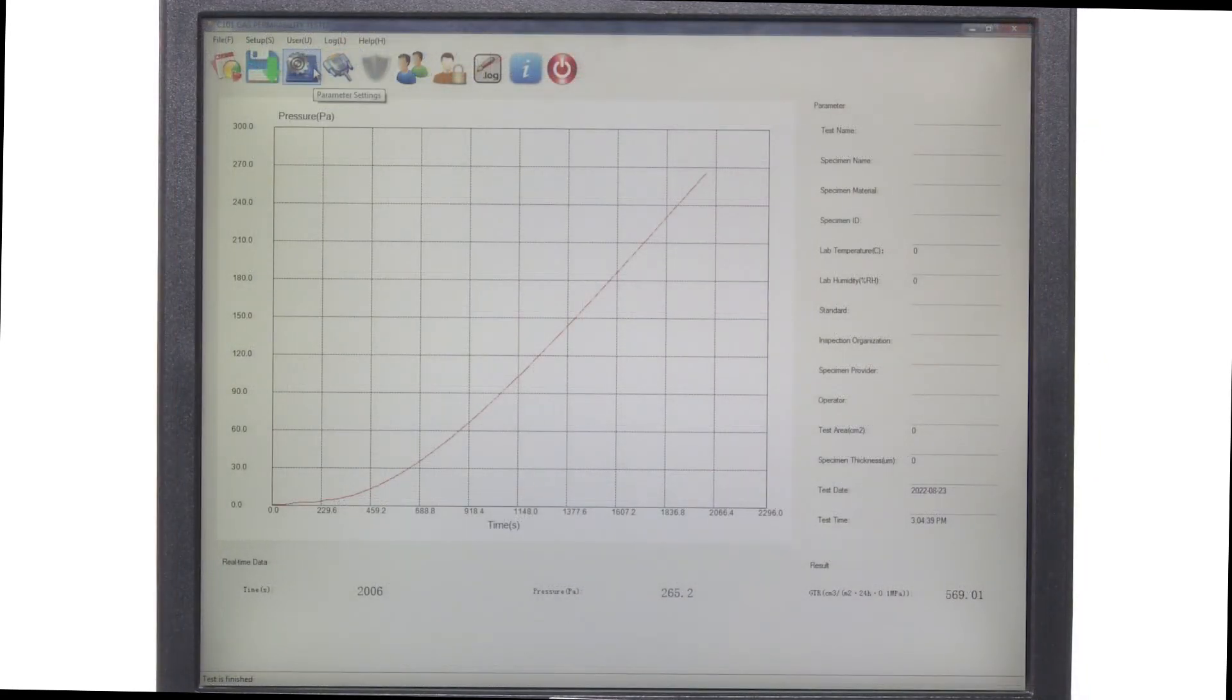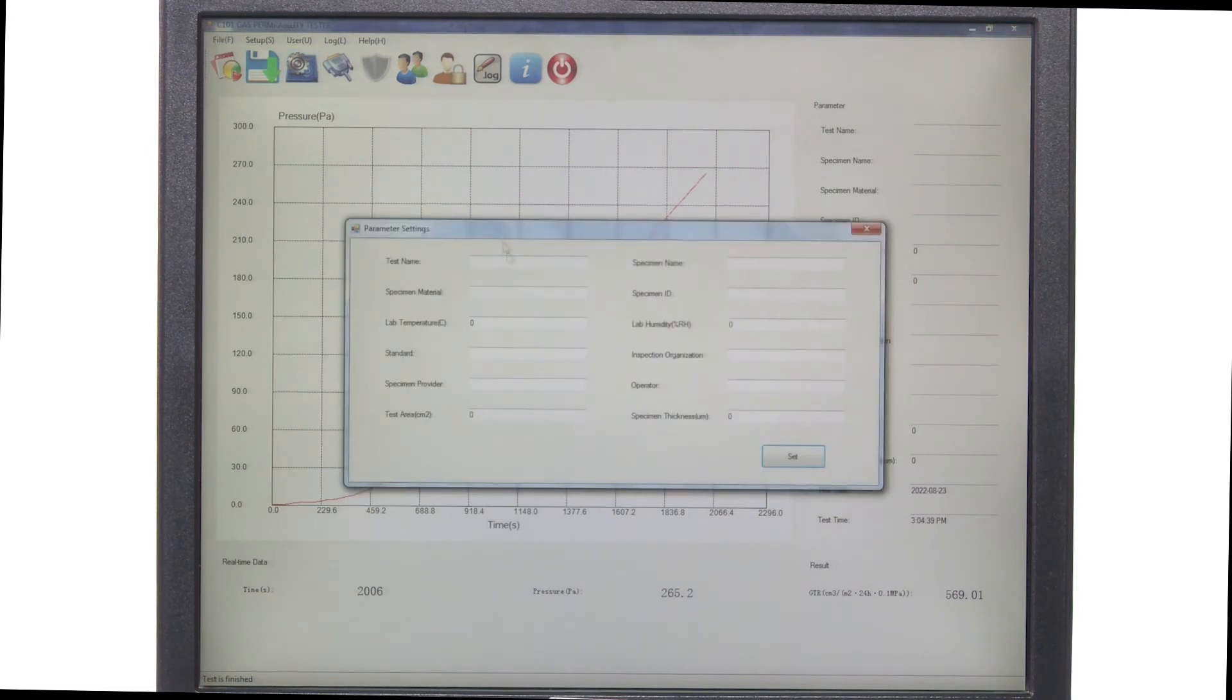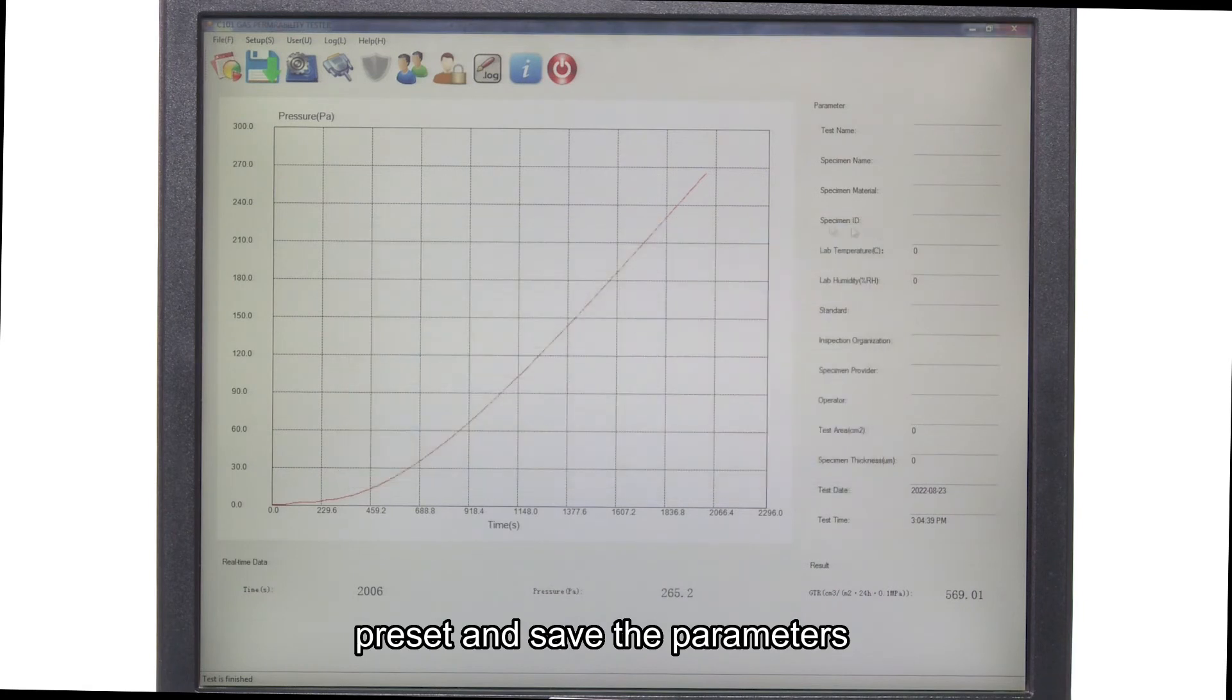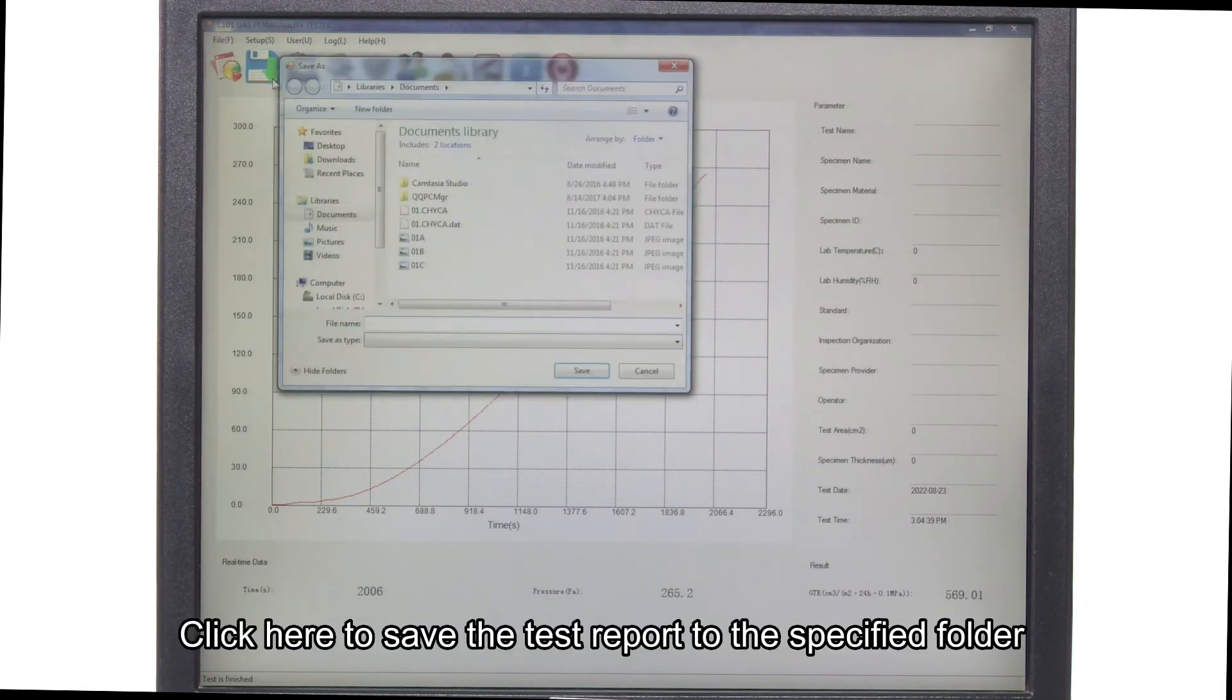On the toolbar here, click setting to enter parameter setting. Then, we can select the item, preset, and save the parameters. Click here to save the test report to a specific folder.